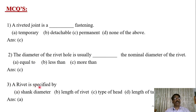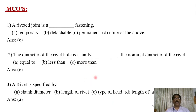The third question: a rivet is specified by — shank diameter, length of the rivet, type of head, or length of tail. The answer is shank diameter. As studied in the parts of the rivet, the size of the rivet is given by the diameter of the shank.